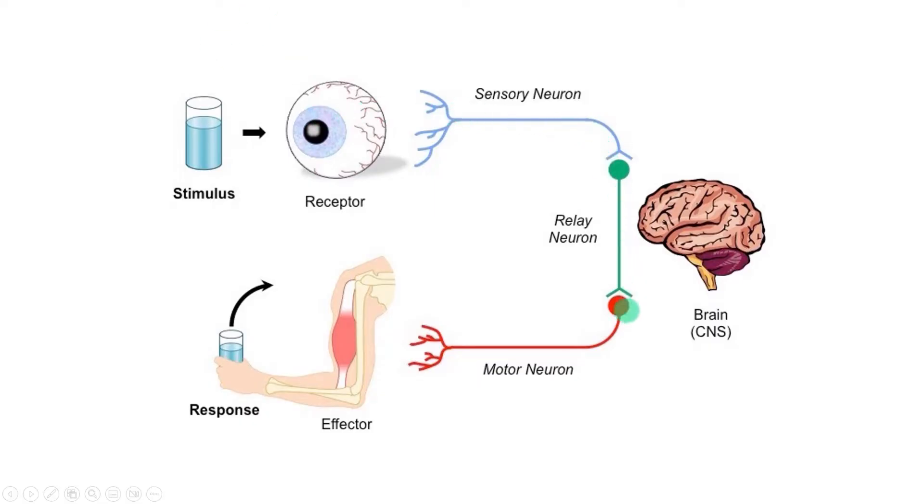And this diagram makes it look easy, but in reality, the brain alone has over a hundred billion neurons. So that's a lot of signaling happening.